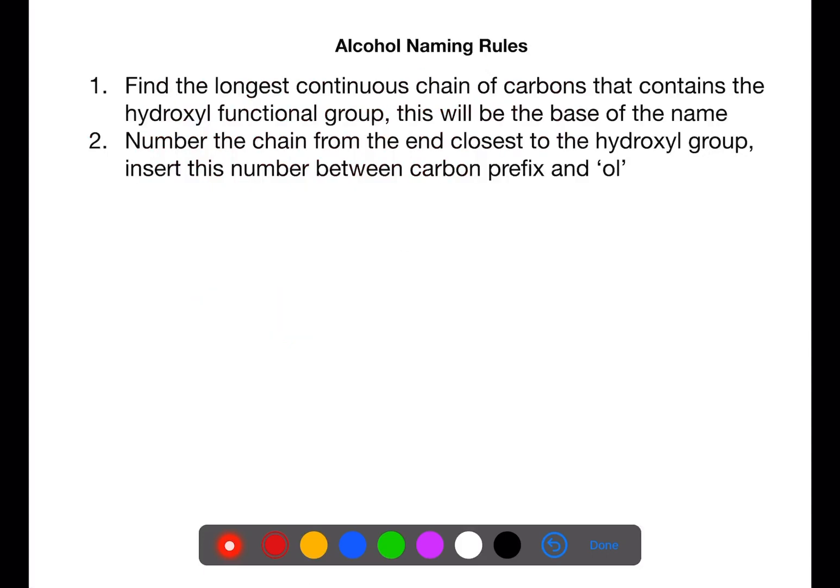To name alcohols you need to find the longest continuous chain of carbons that contains the hydroxyl functional group. This will be the base of the name. Number the chain from the end closest to the hydroxyl group and insert this number between the carbon prefix and the suffix 'ol' which we use for alcohols.